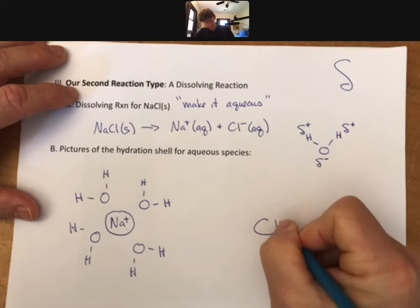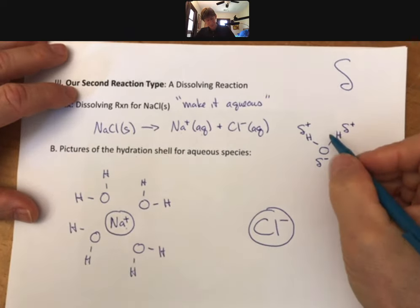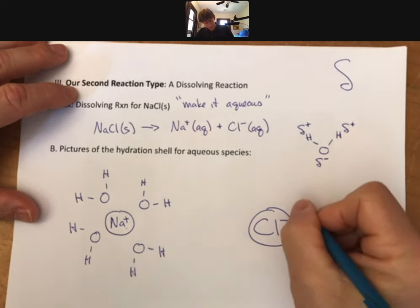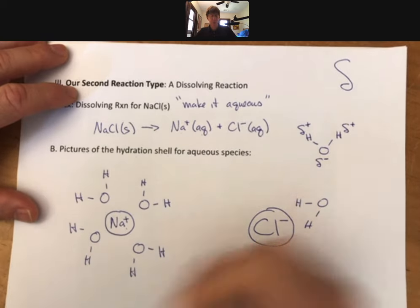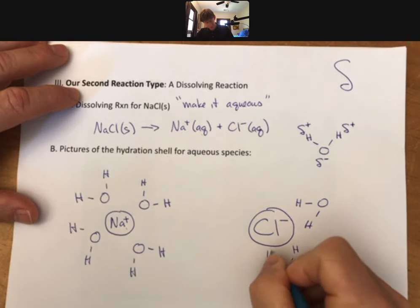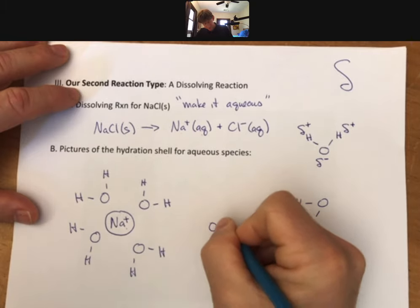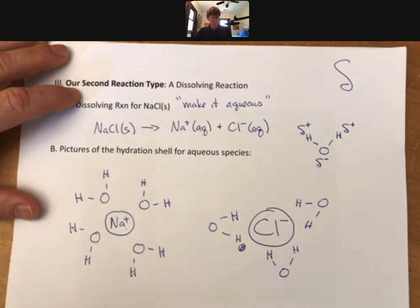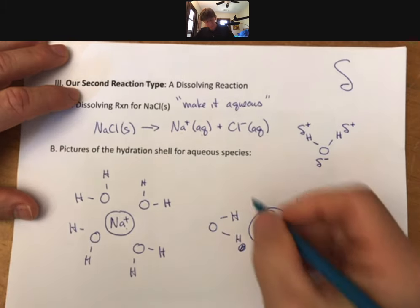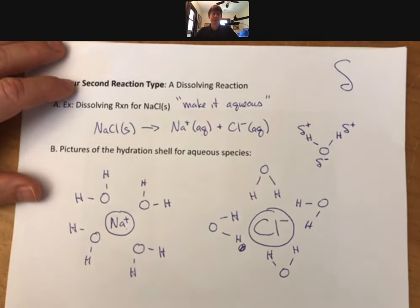On the other hand, chloride ion is negative. And so the hydrogens will be closer than the oxygens. So what you have to do is the water has to be bent. The hydrogens have to be closer. How you do that is up to you.